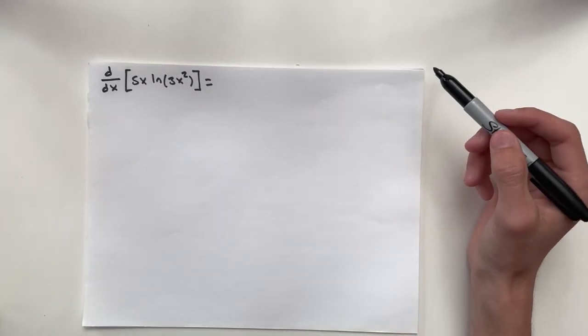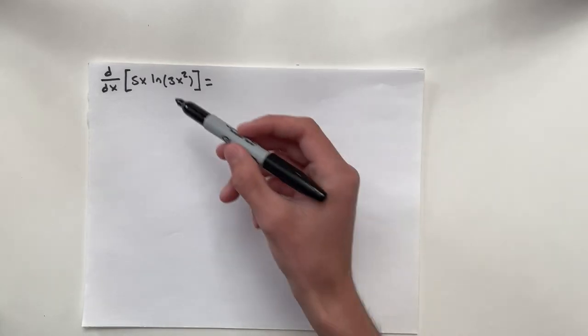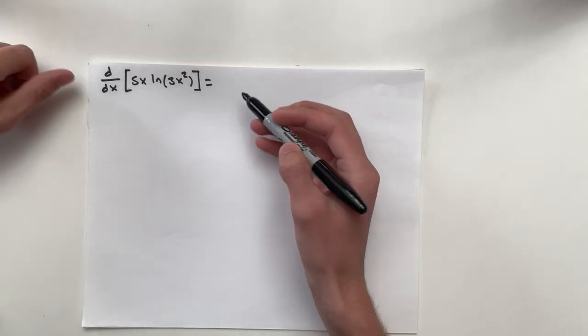The derivative of 5x times natural log 3x squared. This problem clearly requires the product rule.